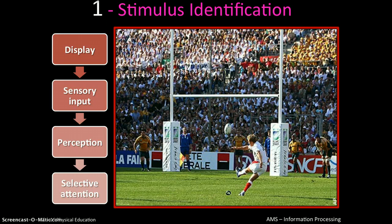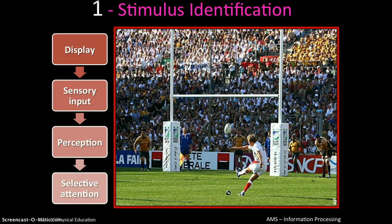Key terminology for stimulus identification: 'display' means everything in your environment — all the people, officials, and opposition around you. 'Sensory input' means the senses used to give your brain information about the display: what you hear (auditory), what you see, what you touch, or what you feel about your body — your kinaesthetic awareness. You then perceive the situation, and selective attention is involved, because focusing on everything in the display would be overwhelming. Instead, you select a specific important cue — such as the goalposts and the ball.